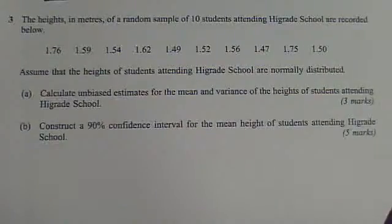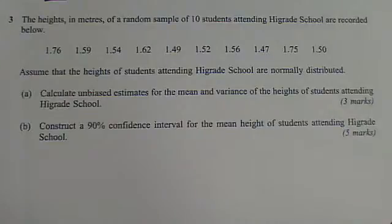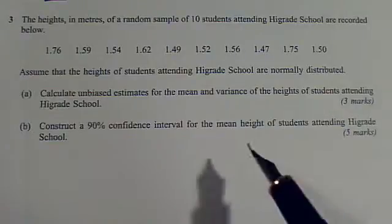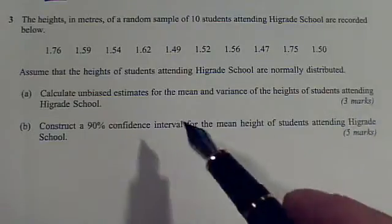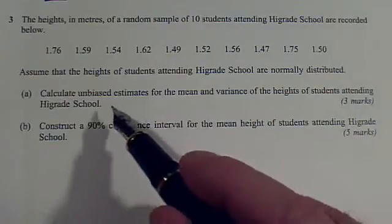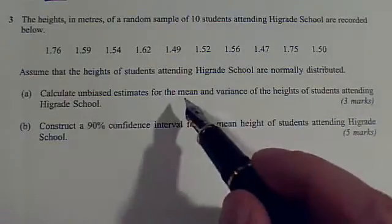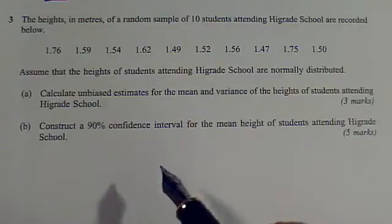Here's a lovely question about confidence intervals. Part A is three juicy marks for getting unbiased estimates of the mean and variance.